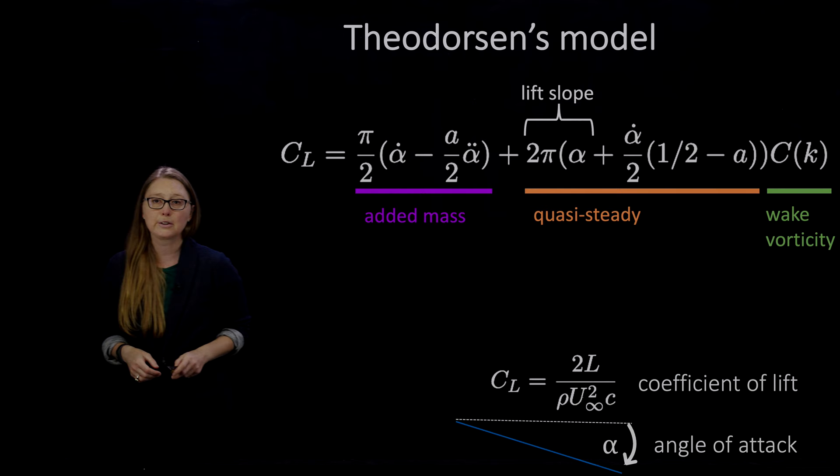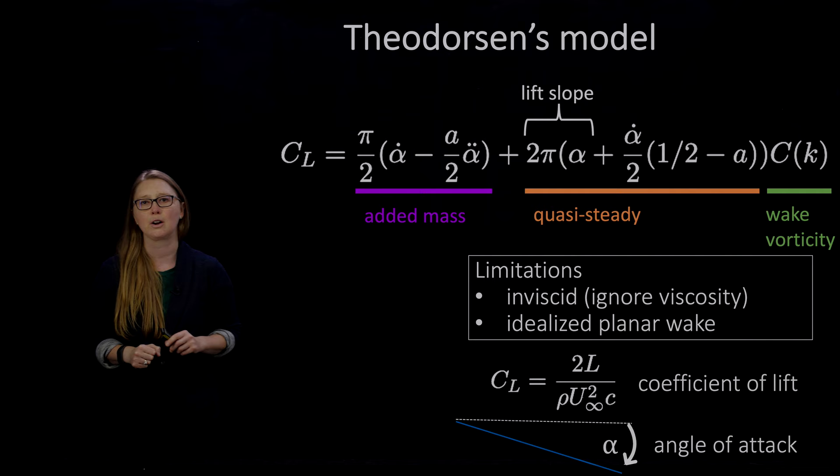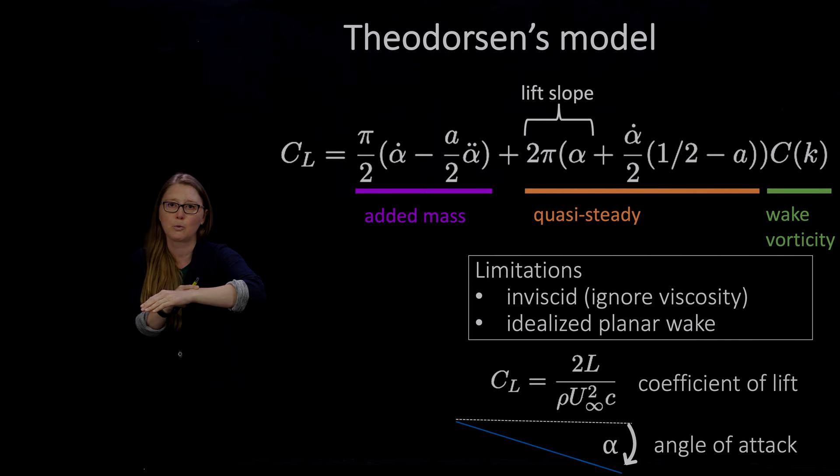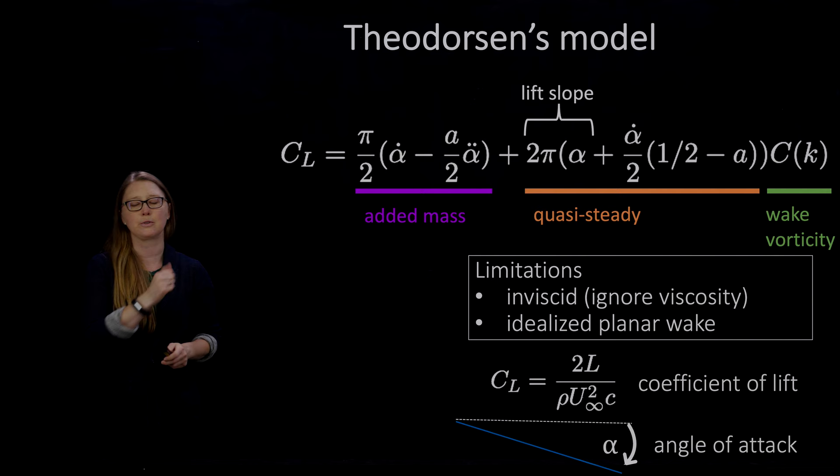This model is great, but it does have some limitations. In particular, that 2π lift slope is really associated with inviscid flow. And as I mentioned, with insects, we care somewhat about viscous flow or about insect-scale robots. It's also for that sinusoidally pitching with idealized planar wake. But we want to know what's going to happen when you do arbitrary motions, not just sinusoidal motions. Also, we really do have flexible wings and there's only a certain amount you can do with this model as your wings get more and more flexible.